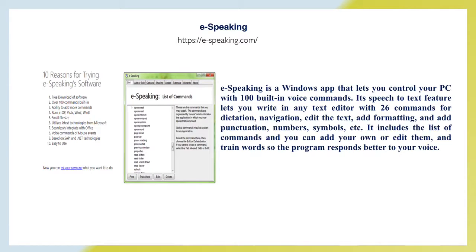eSpeaking is a Windows app that lets you control your personal computer with 100 built-in voice commands. Its speech-to-text feature lets you write in any text editor with 26 commands for dictation, navigation, editing text, adding formatting, punctuation, numbers, symbols, etc. It includes a list of commands, and you can add your own or edit them and train words so the program responds better to your voice.